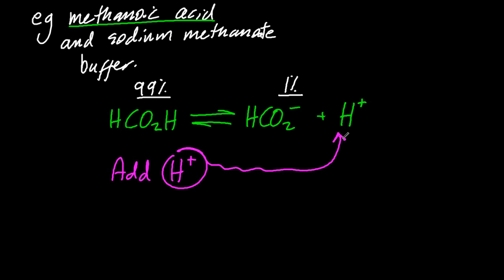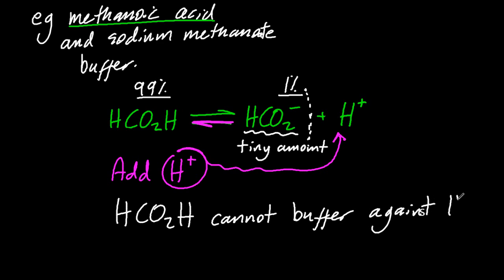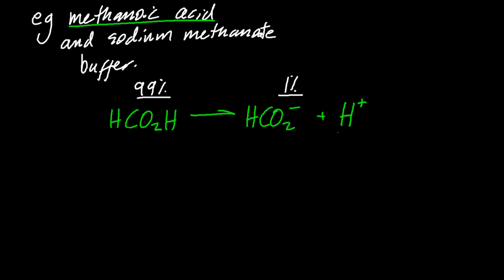But if I add H+, it's going to shift back to the reactants, and there's going to be a problem. There's very little methanoate ion available to shift back. And so once that little bit's been used up, my buffer's not going to absorb any more H+. It can't really buffer against the hydrogen ion, just methanoic acid on its own. The HCO2- runs out.